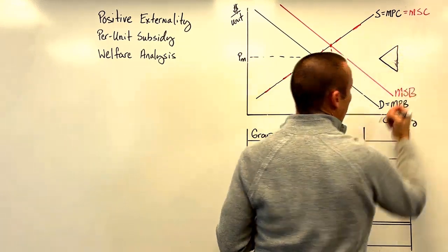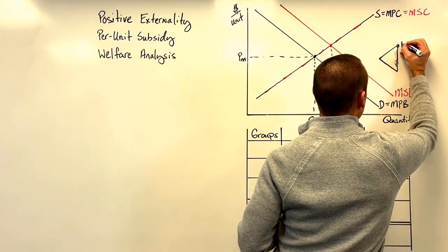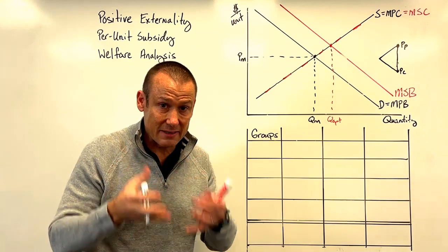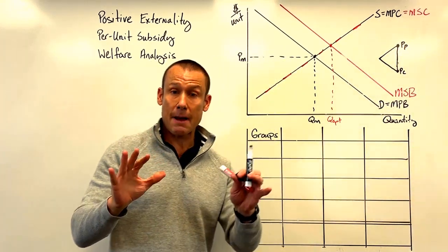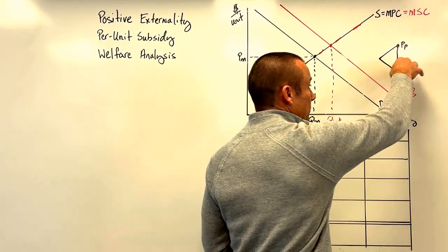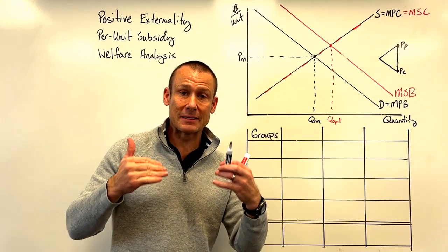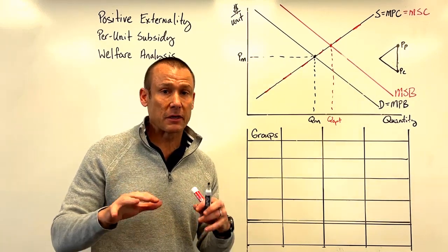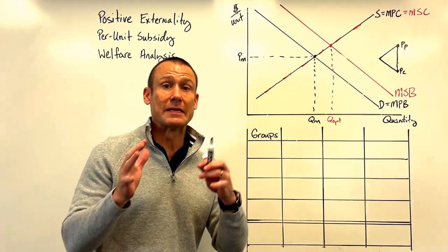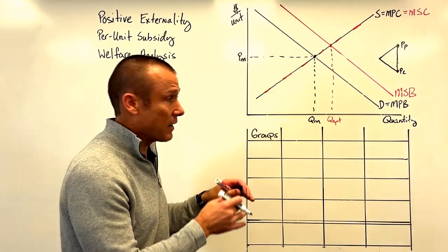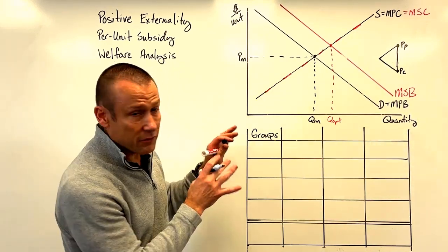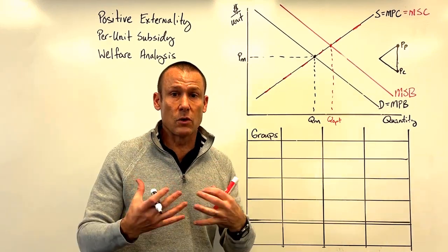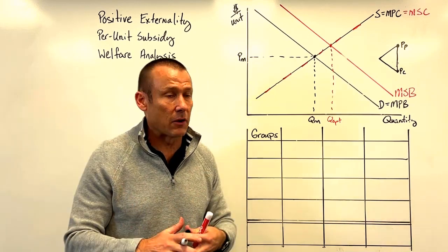When we give market participants a subsidy, price producer goes up — the producer is happy because price is a benefit to them. Price consumer goes down — the consumer is happy because price is a cost to them. When we hand them money, both market participants are going to benefit. Generally we don't have perfectly inelastic or perfectly elastic supply and demand curves, so the benefit is going to be shared almost equally because I've drawn this graph so that the elasticity of supply and demand are about the same.